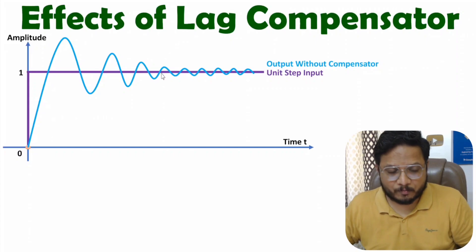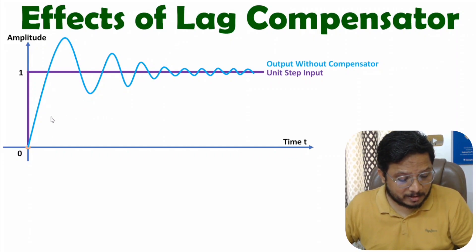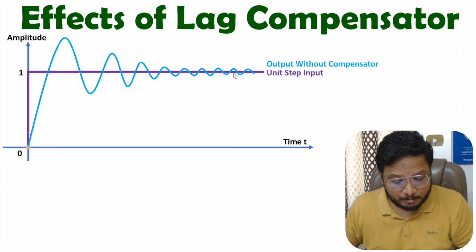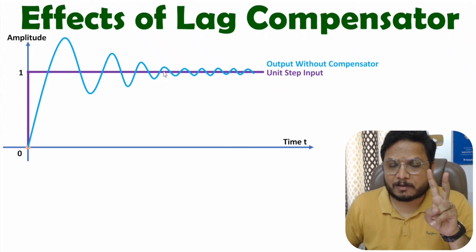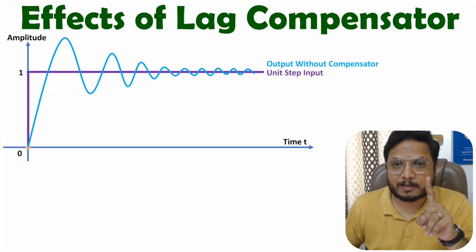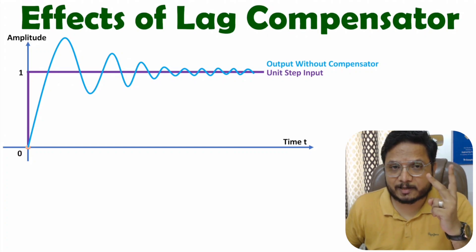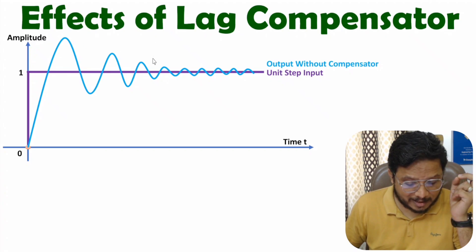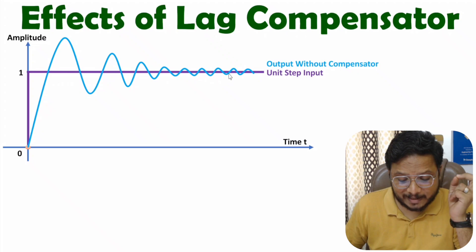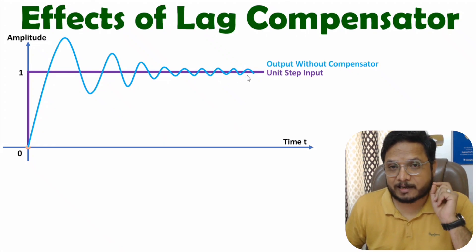So here if you observe, we have one standard second-order system to which we are applying Unit Step Input, and without a Compensator, you can observe the response. Here in this response, we are having two sections — one is transient response and the second is steady state response. The earlier portion of this response is the transient response, and after some time, the output is getting settled, where we have the steady state response.